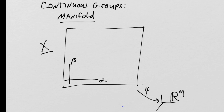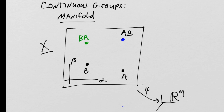X is also a group, so any point in the manifold combined with any other point via the group operation gives another point. If the first is point a and the second is point b, then we get point ab, and possibly ba if the group is non-commutative — those would be different points. This is a topological structure called a manifold, which is topological because the mappings ψ must be isomorphisms.